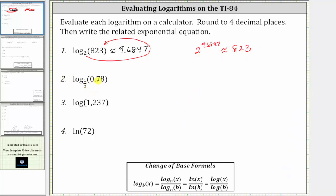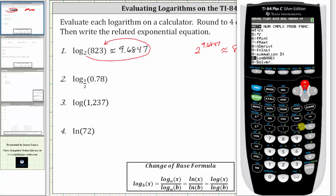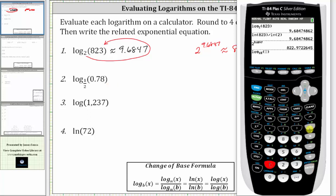Next we have log base one-half of 0.78. Going back to the calculator, again we press math and then option A for log base, enter. The base is one-half, so one divided by two, right arrow. The input or number is 0.78, enter. To four decimal places, we have 0.3585.